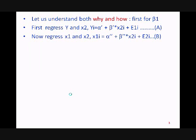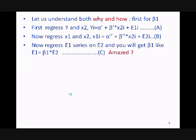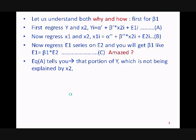Now regress x1 and x2 and you get the E2 term, which is the error term. When you regress E1 and E2, you get β1 - amazed, right? How come we can get β1? Now understand what is happening actually. Equation A gives you the portion of y which is not being explained by x2.